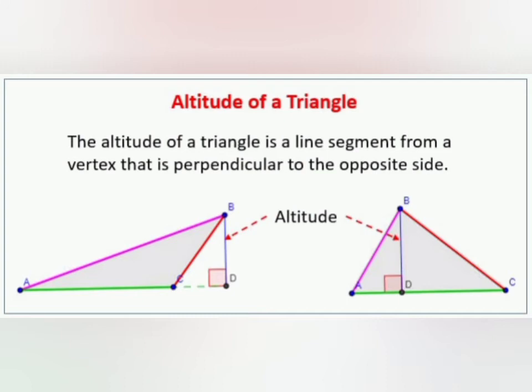Altitude of a triangle: The altitude of a triangle is a line segment from a vertex that is perpendicular to the opposite side. For example, in triangle ABD, from vertex B to vertex D perpendicular, this line segment is the altitude of the triangle.